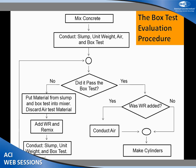This is the box test evaluation procedure: we mix concrete, run slump, unit weight, and air in the box test, then ask — did it pass? If no, we throw everything back in the mixer except for the air pot, add water reducer, mix everything back up again, and run slump, unit weight, and box test again. We may go through this loop several times in incremental dosages to figure out exactly how much water reducer it took to pass.